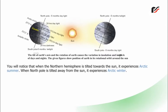When the Northern Hemisphere is tilted towards the Sun, it experiences Arctic summer. When the North Pole is tilted away from the Sun, it experiences Arctic winter.